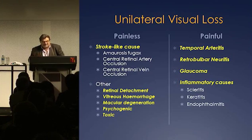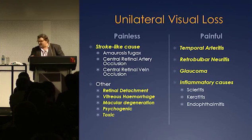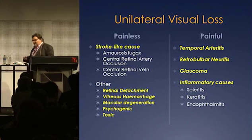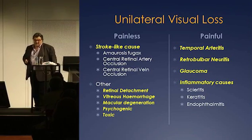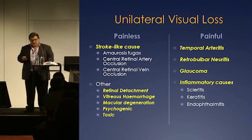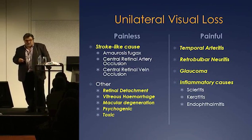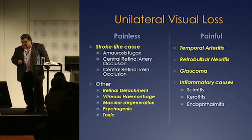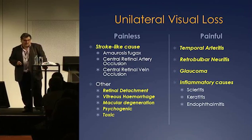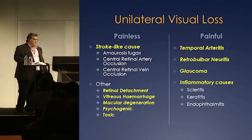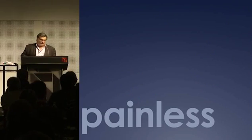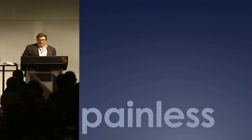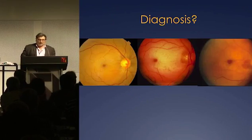The other thing is painless unilateral visual loss. You've got to think about vascular-type lesions where you've got a thrombus — so central retinal artery or central retinal vein occlusions. And then you've got to think about other things such as retinal detachment.